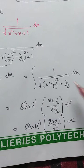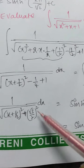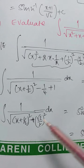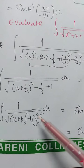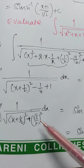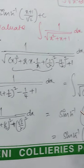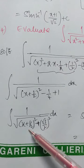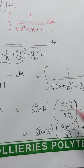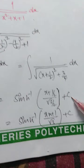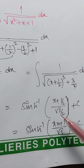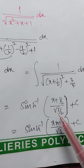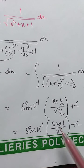Integration of 1 by root of x plus 1 by 2 whole square plus 3 by 4, dx. Here 3 by 4 can be written as root 3 by 2 whole square — since root 3 whole square is 3 and 2 whole square is 4. So integration of 1 by root of x plus 1 by 2 whole square plus root 3 by 2 whole square, dx. This is in the form of integration of 1 by root of x plus a whole square, dx, equal to sinh inverse of x by a plus c. Here x is x plus 1 by 2, a is root 3 by 2. By LCM, 2 into x is 2x plus 1 by 2, divided by root 3 by 2, by cancellation of denominator.